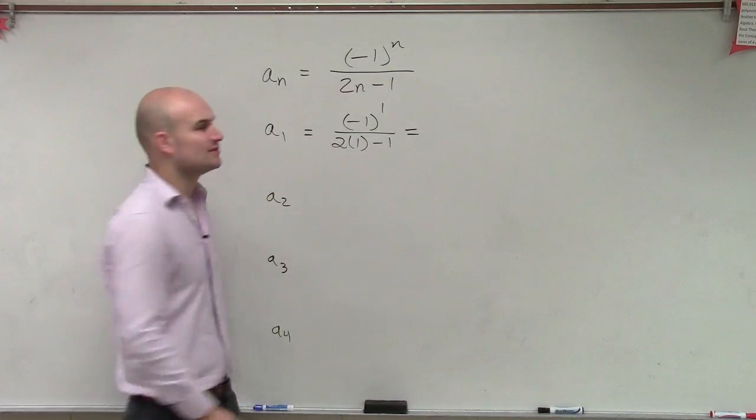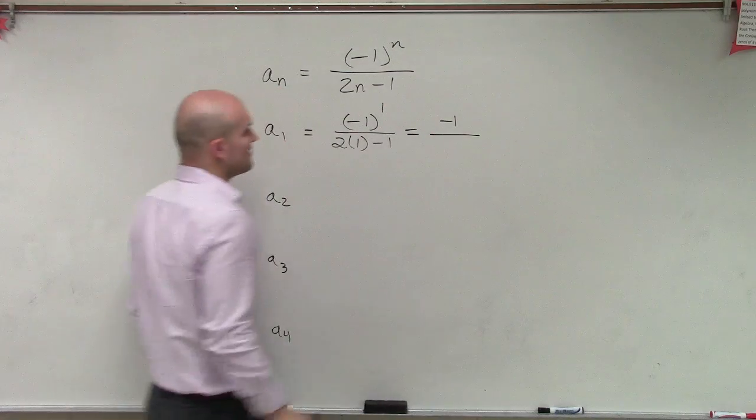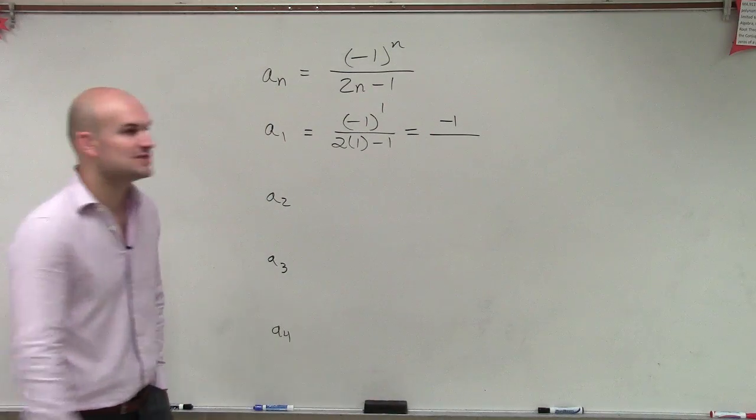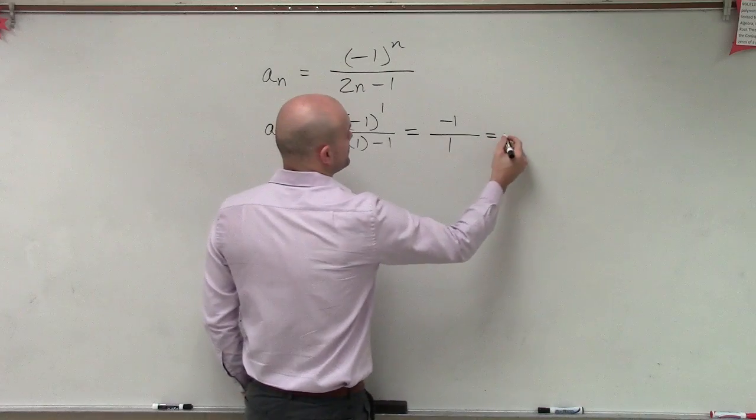So negative 1 to the first power is negative 1 divided by 2 times 1 is 2 minus 1 is 1, which equals negative 1.